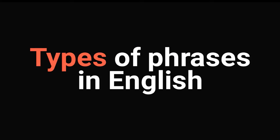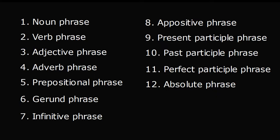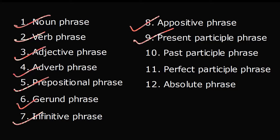We have 12 types of phrases in English: noun phrase, verb phrase, adjective phrase, adverb phrase, prepositional phrase, gerund phrase, infinitive phrase, appositive phrase, and three types of participle phrases — present participle phrase, past participle phrase, perfect participle phrase — and absolute phrase. We're going to master all these phrases one by one.